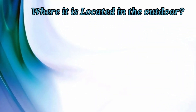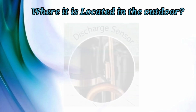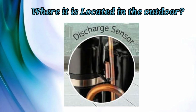The F3 sensor is located on the discharge pipe of the compressor. As you can see in the picture, it is mounted on the compressor discharge. Check that sensor when you encounter error code F3.